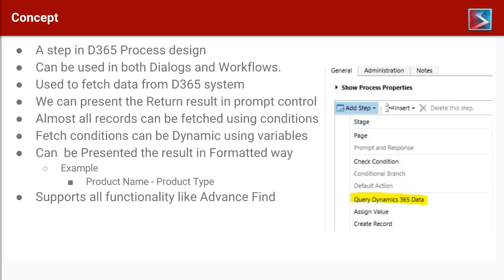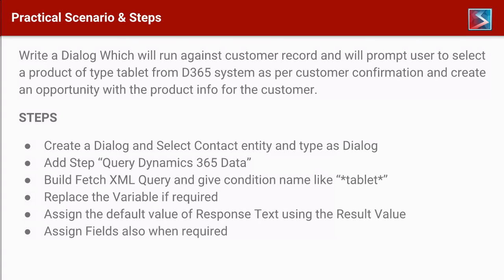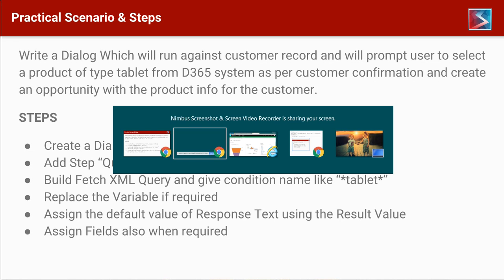It supports all the advanced functionality that Dynamics 365 provides, and the different types can be bound with option sets of type picklist and two-option sets. Now let's jump to the practical scenario. We will create a dialogue that runs against a customer record, prompting the user to select a product of type tablet from the Dynamics 365 system. The user will then confirm and create an opportunity with the product information for the customer.